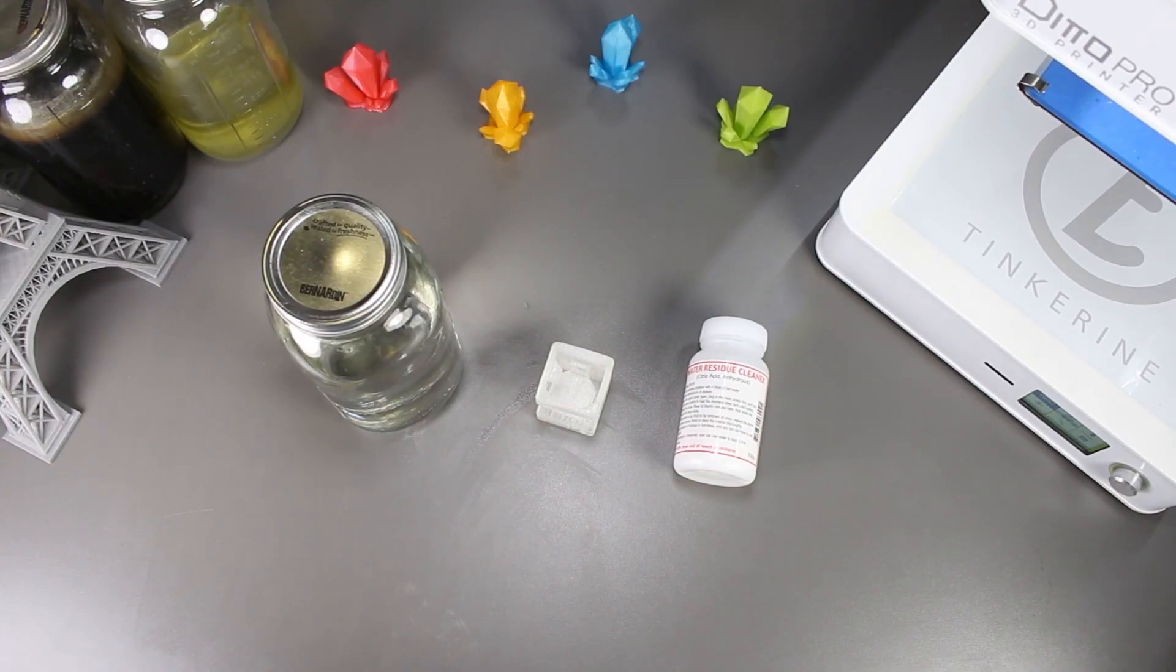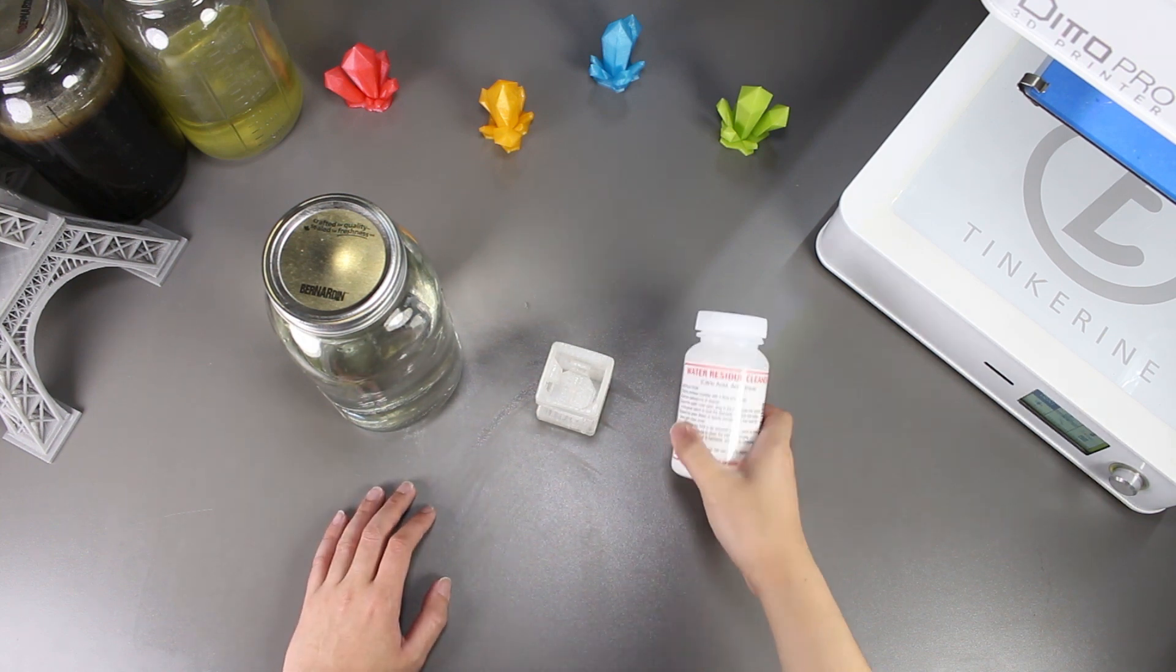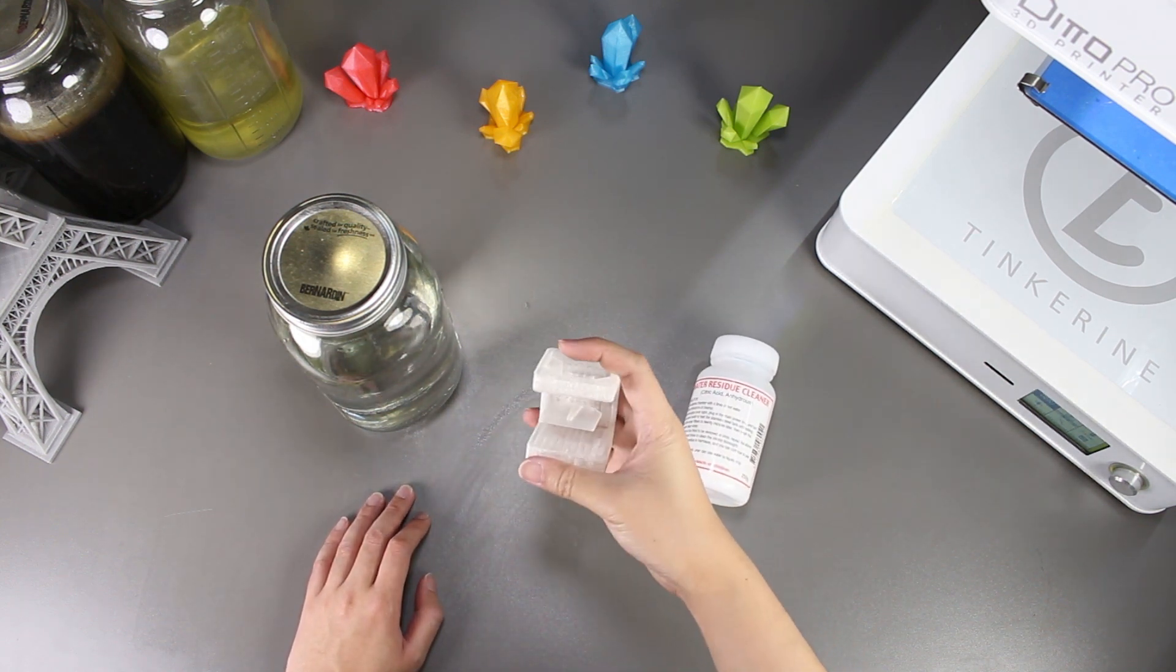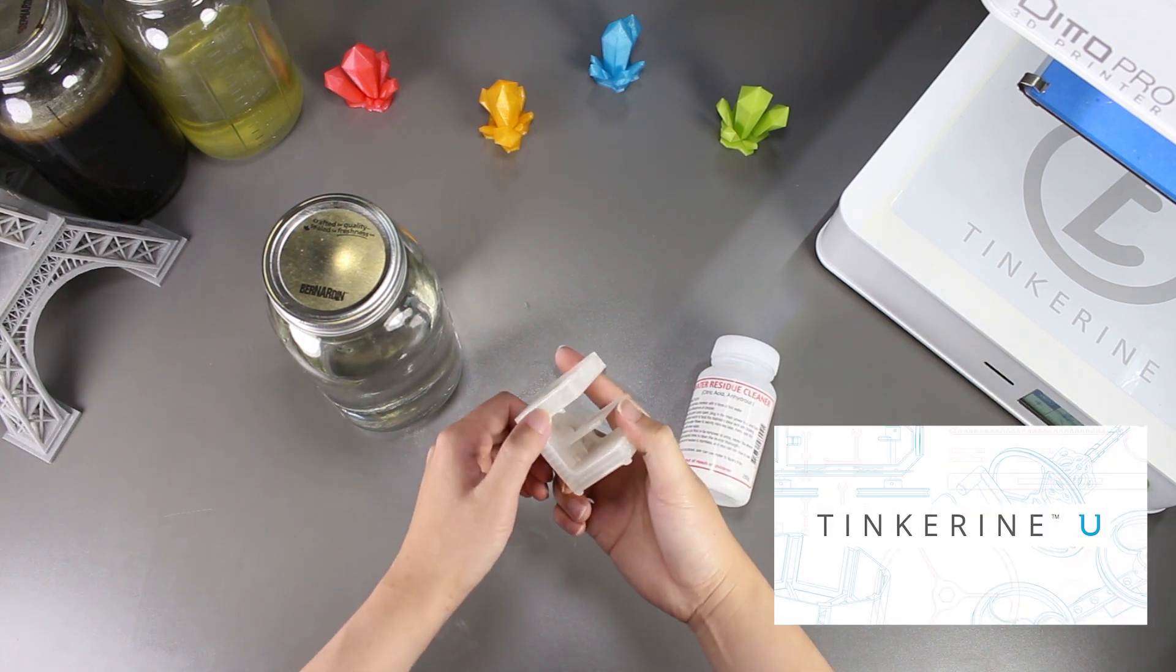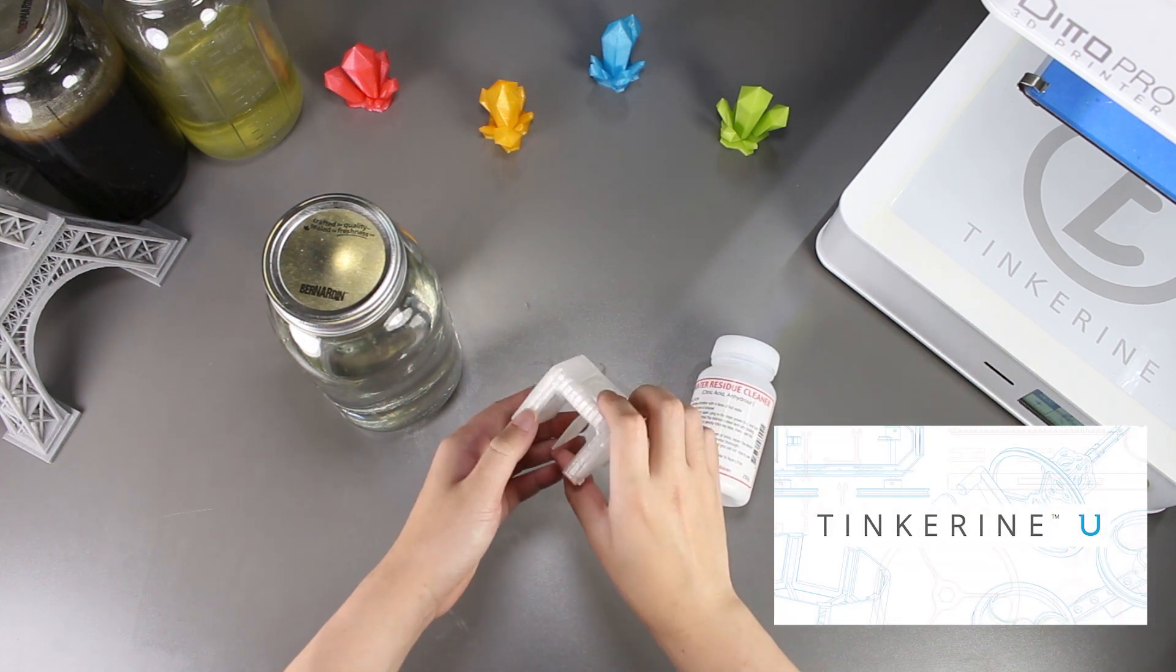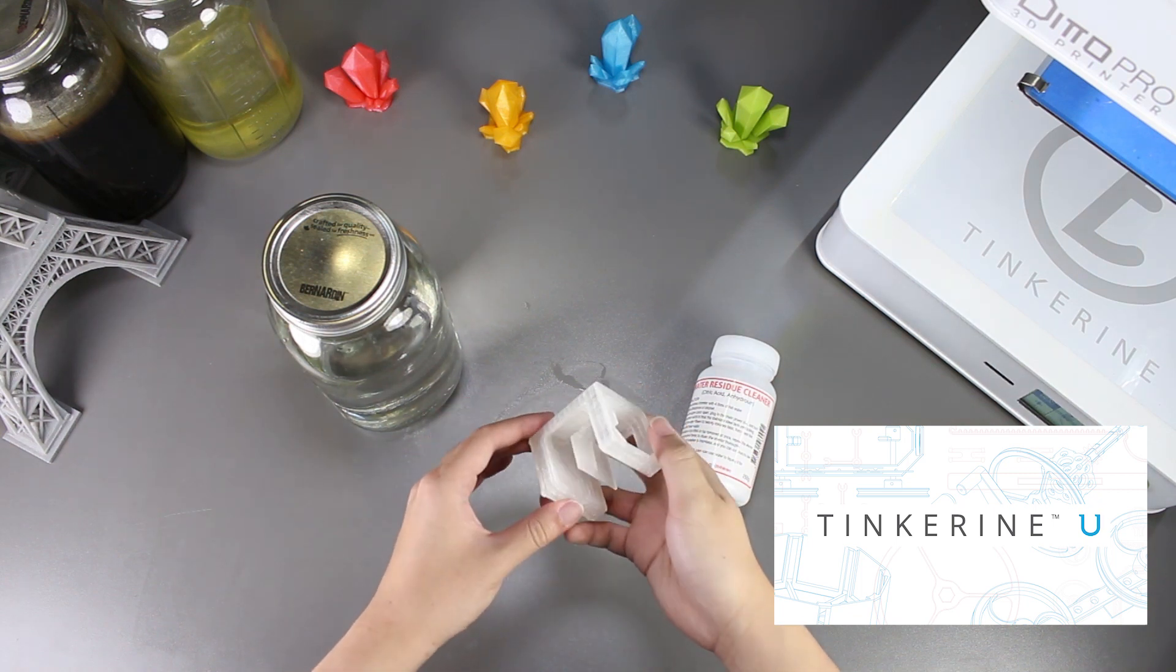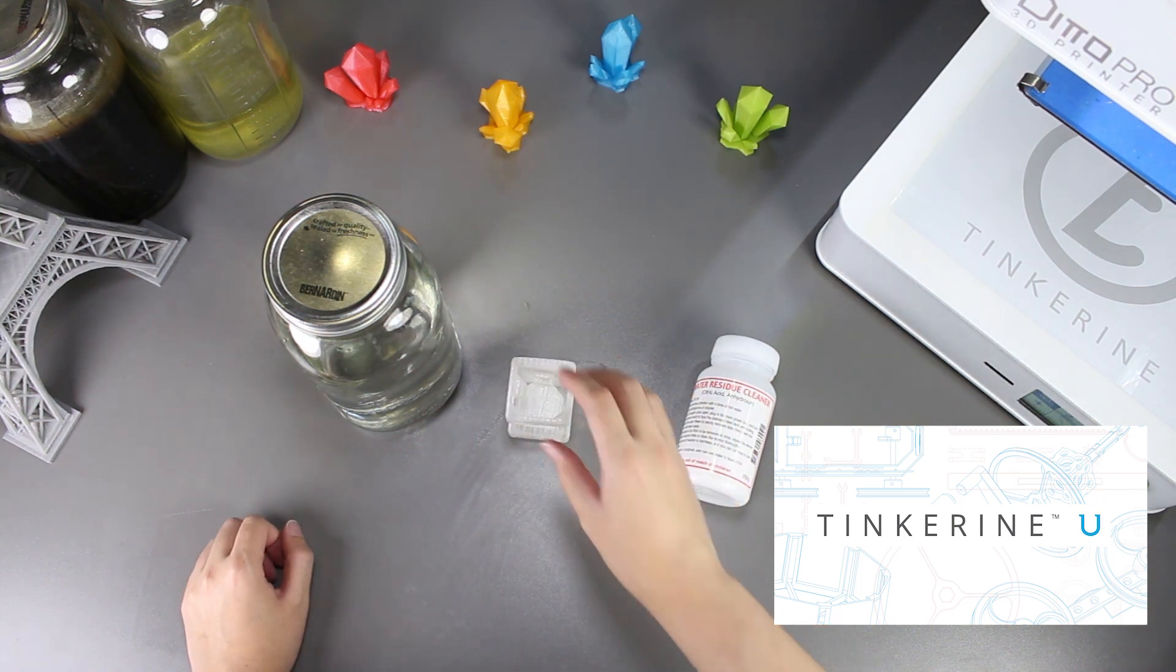Well, there we have it. We tried to smooth our PLA print with pure citric acid and it doesn't work. We'll just have to look into something else. Before I end, I just want to remind everyone about Tinkering U. The platform has a lot of teaching resources on 3D printing and how you can incorporate it into your curriculum. So be sure to check it out.